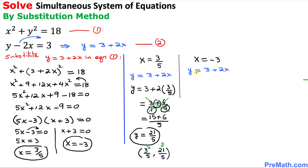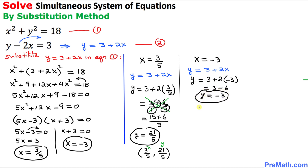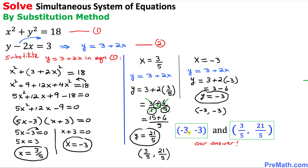Now for x = −3, we find y using y = 3 + 2x: y = 3 + 2×(−3) = 3 − 6 = −3. So the second ordered pair is (−3, −3). We have two sets of ordered pairs as our final answers. Thanks for watching — please don't forget to subscribe to my channel for more exciting videos!